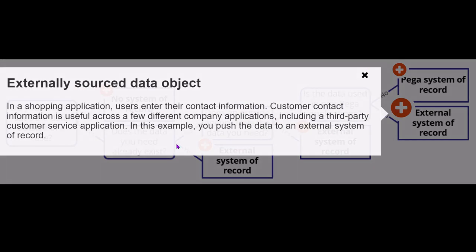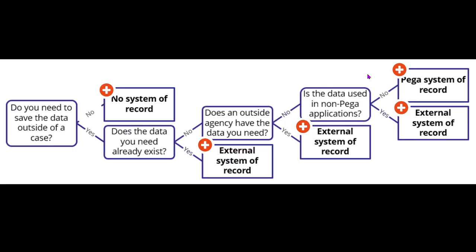If it is an external system of record, you push the data to it manually. To summarize the flow: if the data is local and needed only within the case for processing and decisioning, you need not store it externally. If the data already exists in a third party or external system, you also need not save it since it's already there and you can still use it.